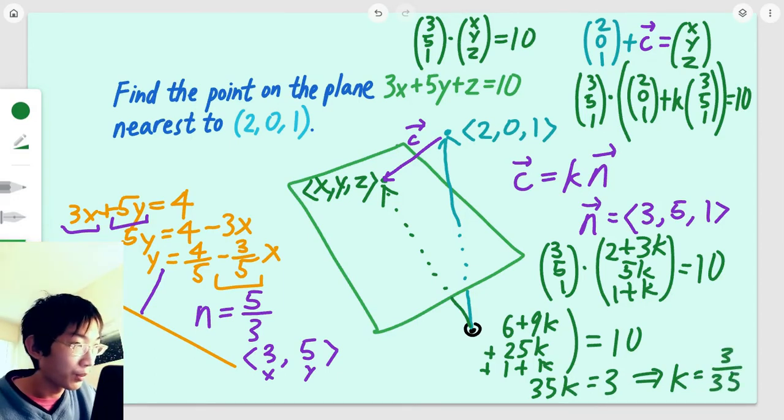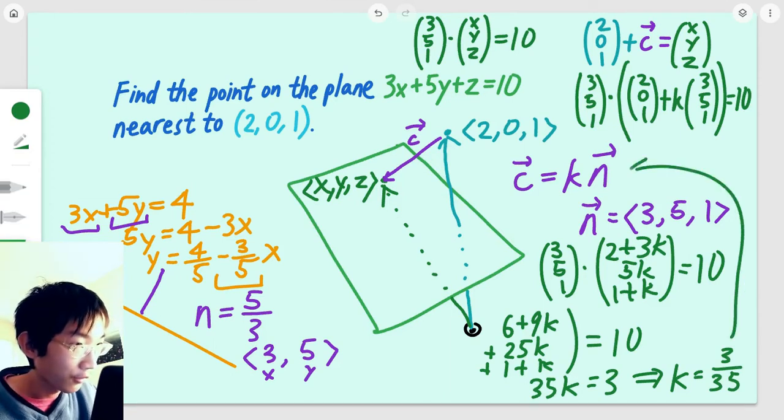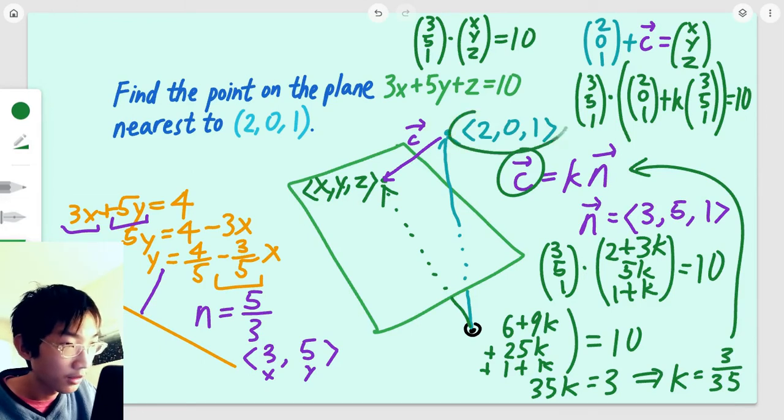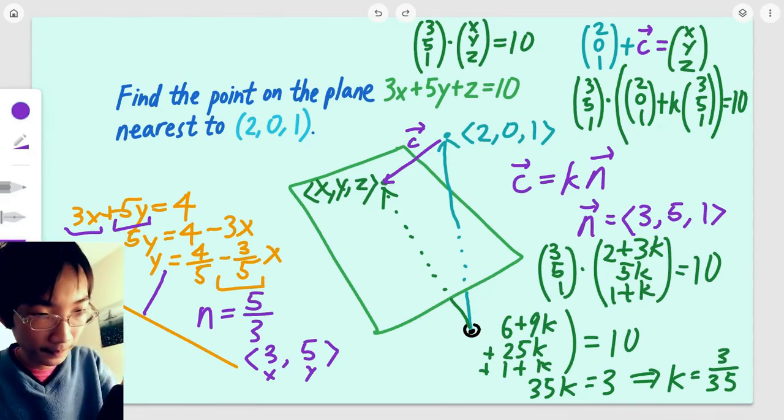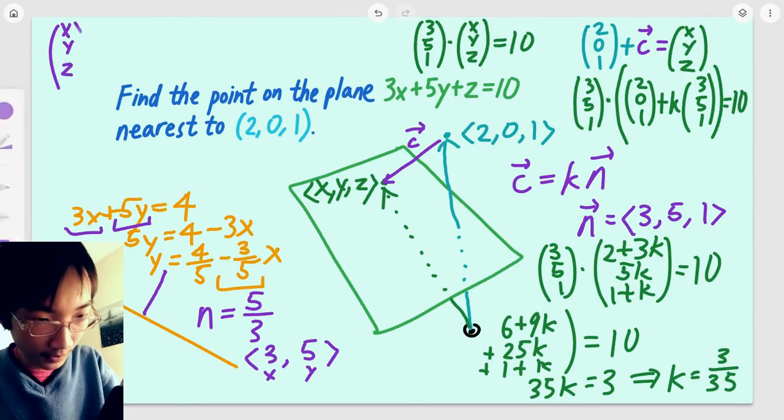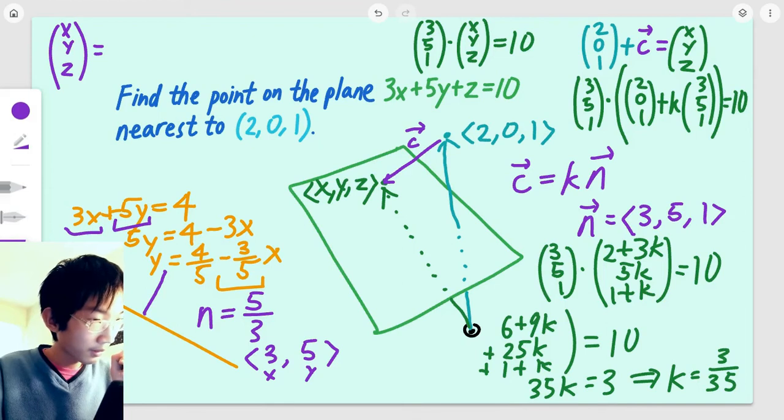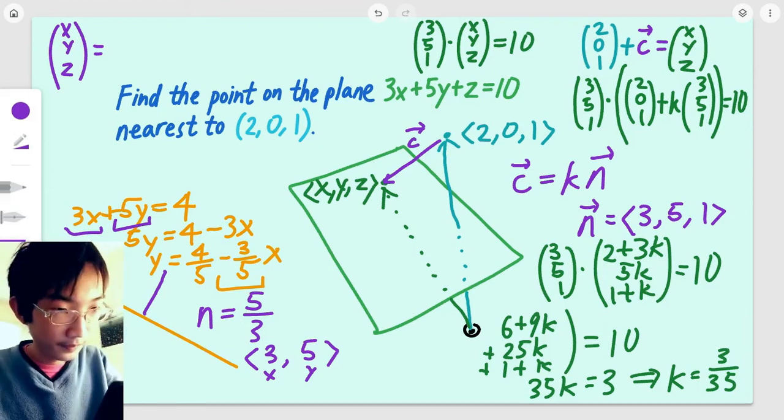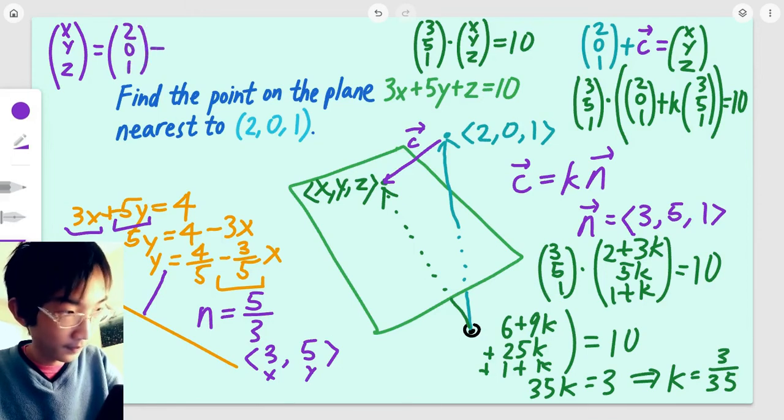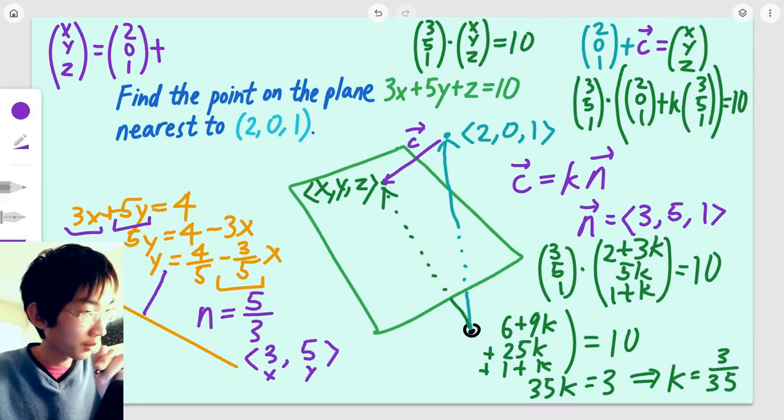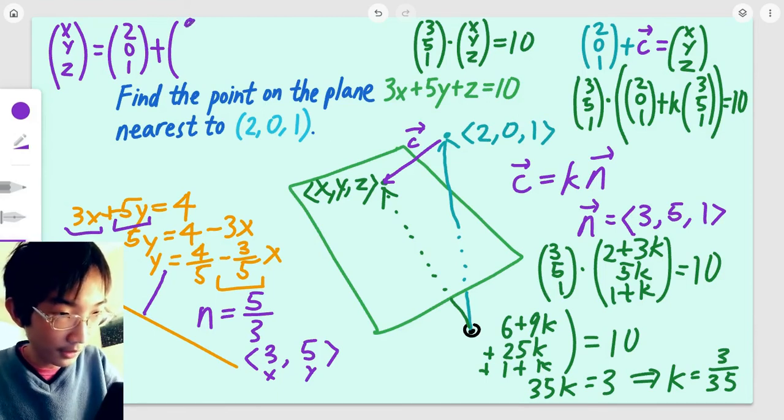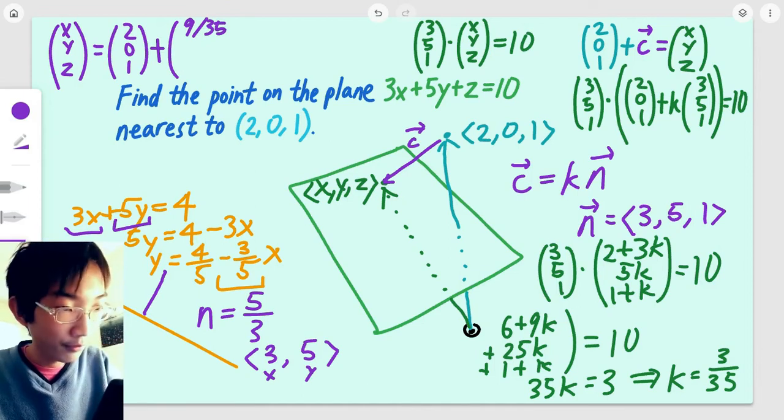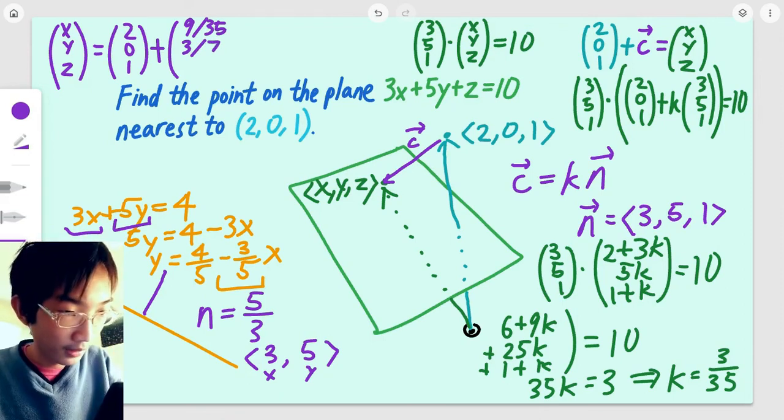Now we know k. We can plug k back into this equation to find what c is, and we can add c to (2, 0, 1) to find out what (x, y, z) is. So, (x, y, z) equals (2, 0, 1) plus k times (3, 5, 1), which would be c. k times 3 would be 9/35, k times 5 will be 3/7, and k times 1 will be 3/35.